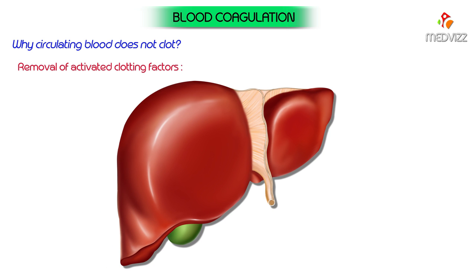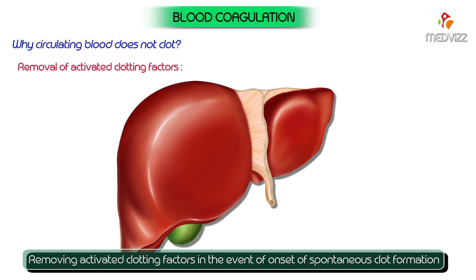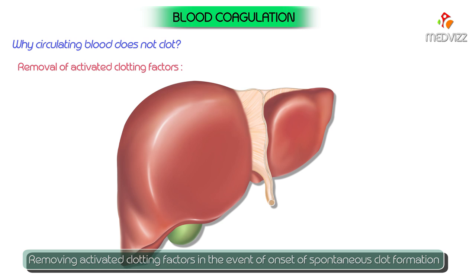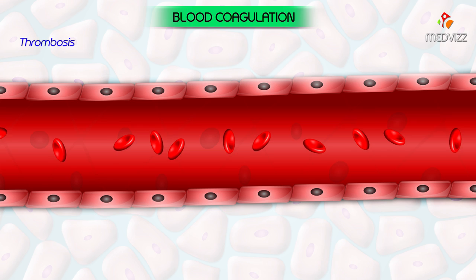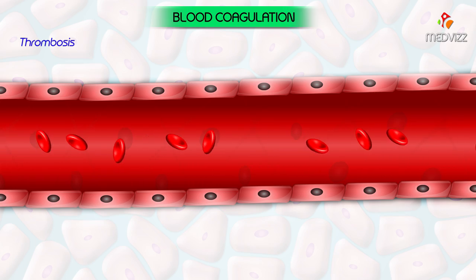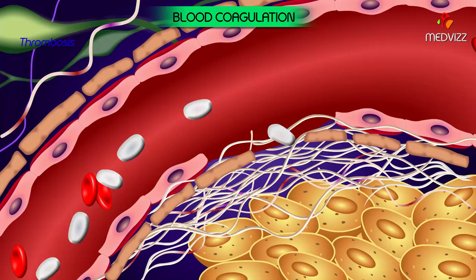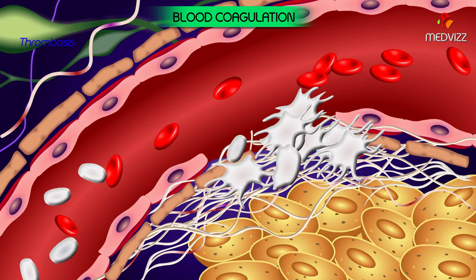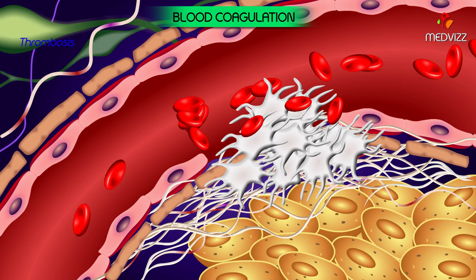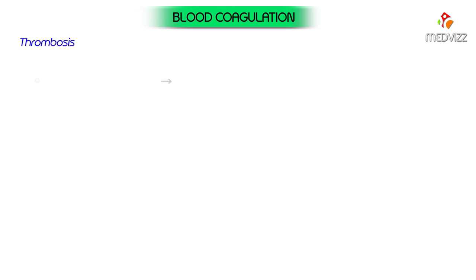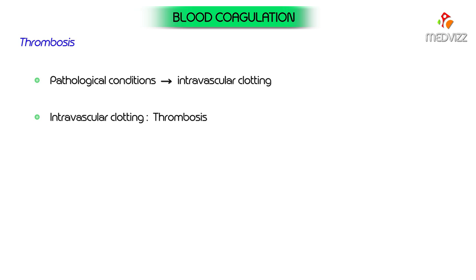Thrombosis: under normal physiological conditions, circulating blood does not clot, and clotting of blood occurs only extravascularly when a vessel has been injured and bleeding has occurred. However, under certain pathological conditions, intravascular clotting is called thrombosis, and the clot so formed is called a thrombus.